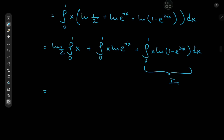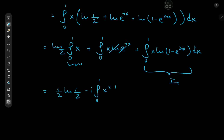Integrating x gives x²/2, and with limits 0 to 1 that gives 1/2, so we have (1/2)·log(i/2). For the second term, log and the exponential are inverse functions, leaving −ix, so the integral from 0 to 1 of x·(−ix) dx = −i · (x³/3) evaluated from 0 to 1, giving i/3. So we have (1/2)·log(i/2) + i/3 plus the integral I₁.